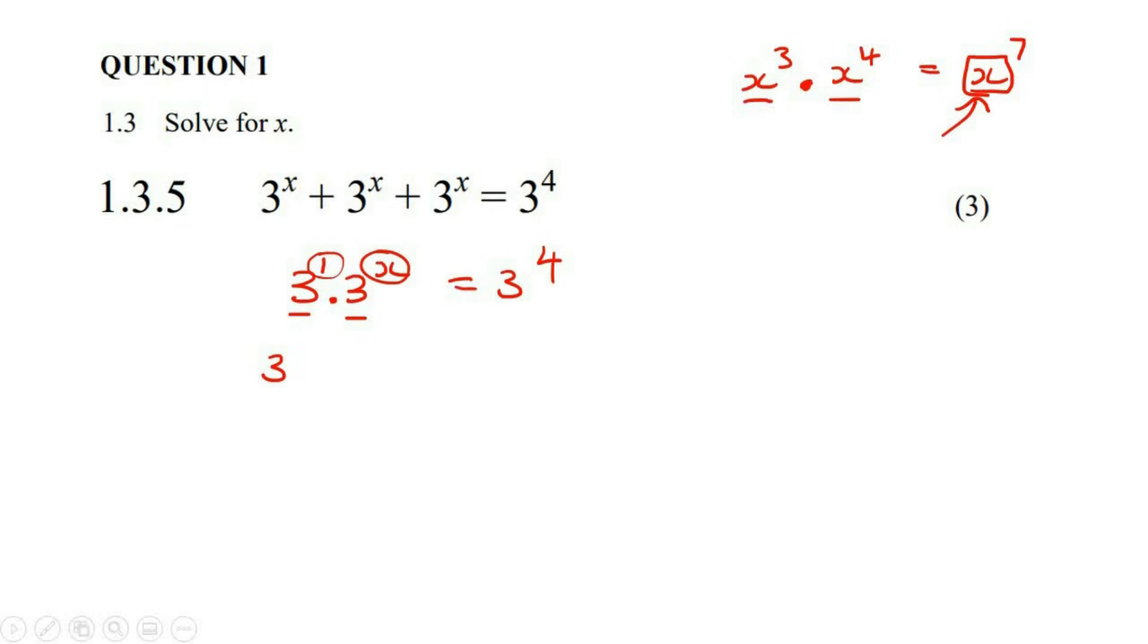But Kevin, 3 times 3 is 9. I hear you, but we're not multiplying 3 times 3. We're multiplying 3 to the power of 1 and 3 to the power of x. It's very different. Okay, so we end up with 1 plus x. So we just added the exponents, just like we did over here.